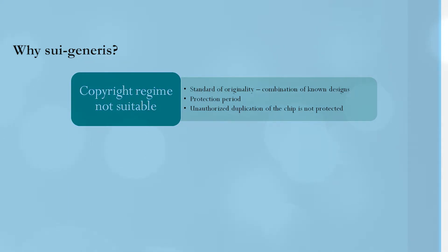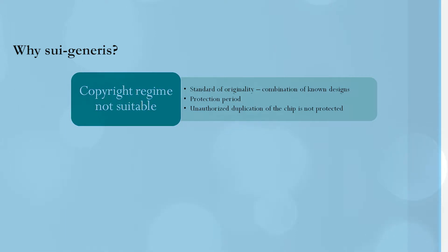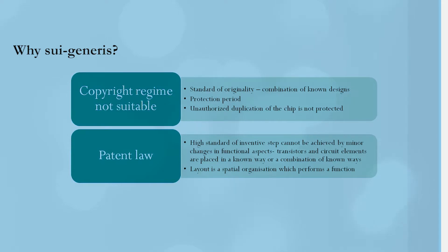But why a sui generis regime for semiconductor chips? The copyright regime seems unsuitable. The standard of originality required for copyright law is distinct from that required for semiconductor chips, where originality involves a combination of known designs. The protection period in copyright is seemingly high — life plus 60 years — whereas semiconductor chips have a low shelf life and require lower protection periods. Unauthorized duplication is not adequately protected, and the idea-expression dichotomy in copyright can hamper protection of semiconductor chip designs. Patent law is also not very suitable because the high standard of inventive step cannot be achieved by minor changes in the functional aspects of transistors and circuitry elements in the semiconductor chip.